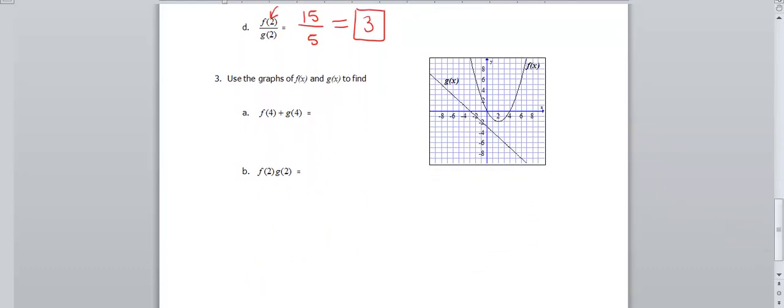The last problem. This one's very similar to the table problem, except this one you're given graphs. So you have to know how to read the graphs in order to be able to get our outputs. So you'll notice that the input for this one is 4 for both of these problems. So that means I need to go over here to x equals 4, and I'm going to pick off my y value. So on f, my y value at 4 is 0. So that's going to be 0 plus my g value at 4, however, looks like negative 7. So that's my g value here, so that'll be 0 plus negative 7. So that gives us a total of negative 7.